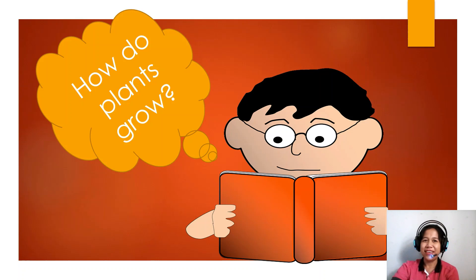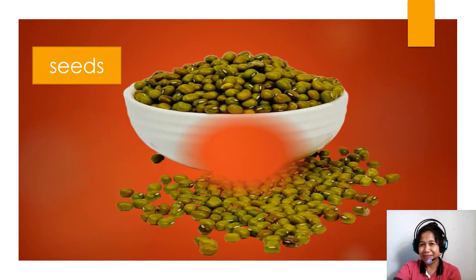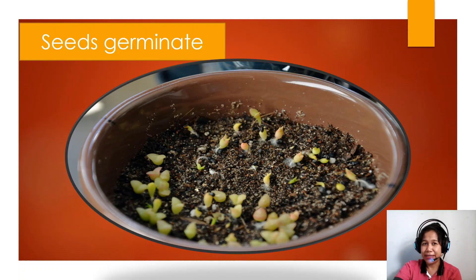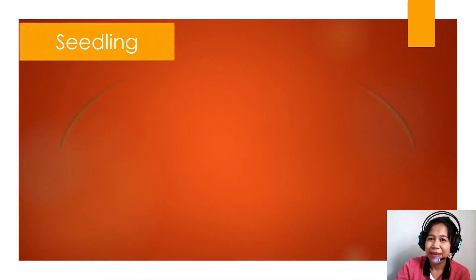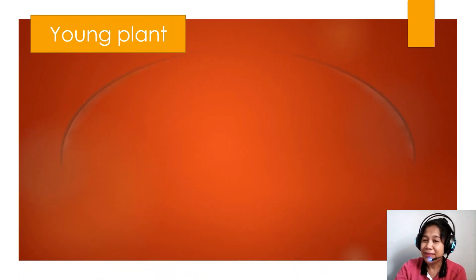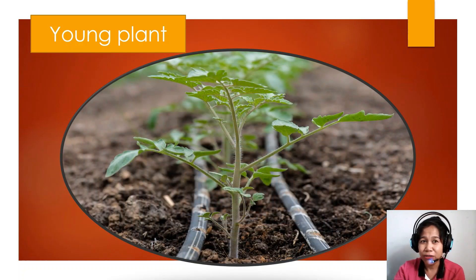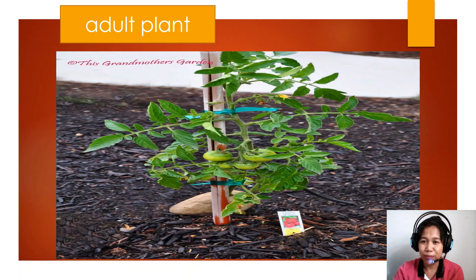Now the question is, how do plants grow? It starts as a seed. Seeds germinate, then develop into sprouts. Sprouts grow into seedlings. Seedlings grow into a young plant. A young plant develops into an adult plant.